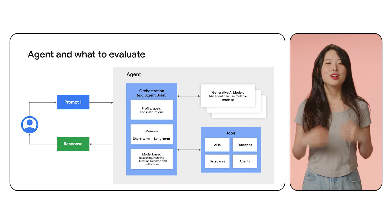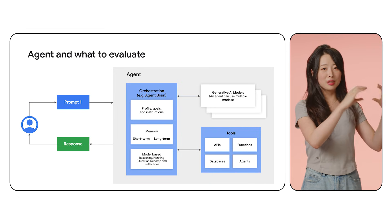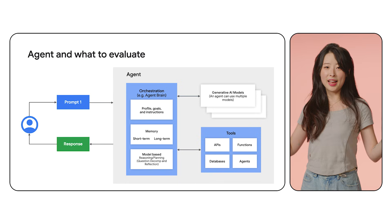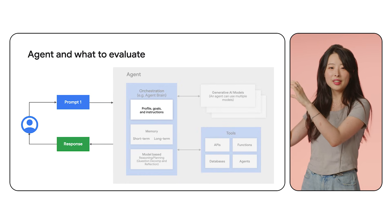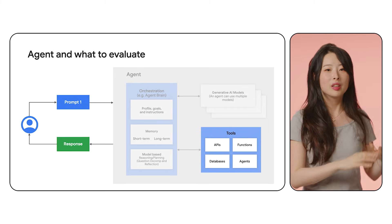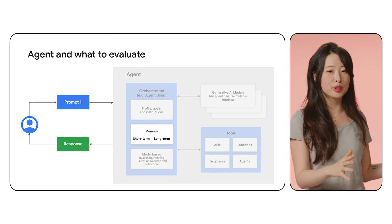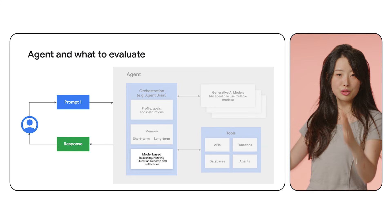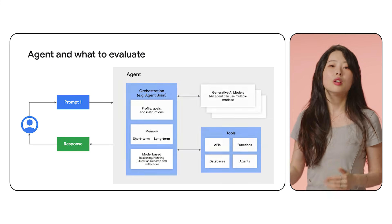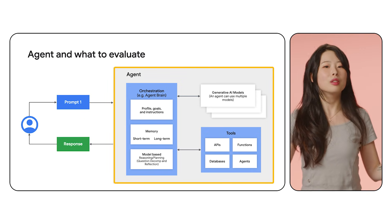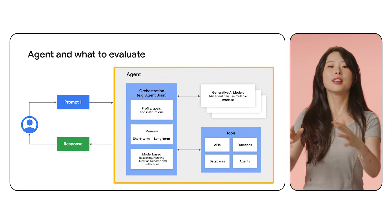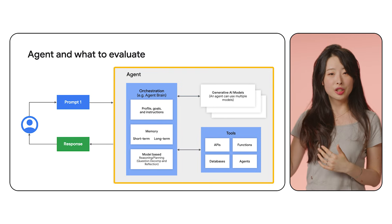The second part of today's video explains what agent evaluation really means. Agent evaluation isn't just testing the model — it is the whole stack: the LLM brain, the prompts guiding it, the external tools and APIs, the memory system carrying information forward, and the orchestration logic tying it all together. So when we evaluate an agent, we are asking: did this entire system — including planning, tool use, memory, and reasoning — reliably achieve its goal?